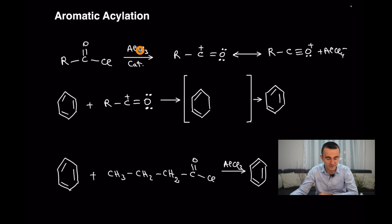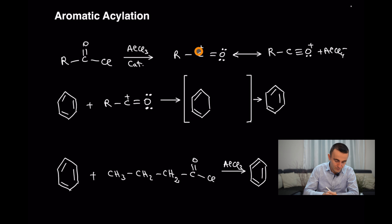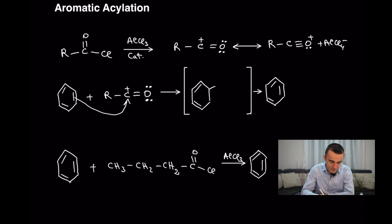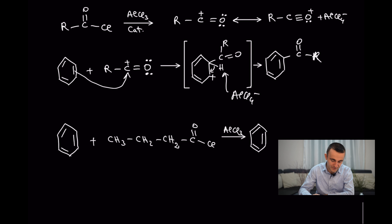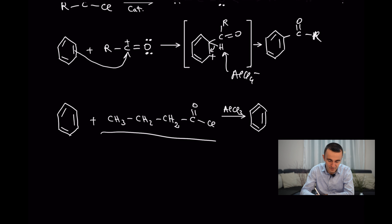Let's move now to aromatic acylation. Scientists found that by using an acyl group instead of an alkyl halide, you save the chain and avoid rearrangement — that was a great improvement. An acyl group treated with aluminum chloride as catalyst forms an electrophile that has two resonance structures, but one is more stable. The double bond attacks the carbon in the same mechanism as before, forming the intermediate.